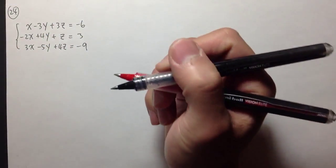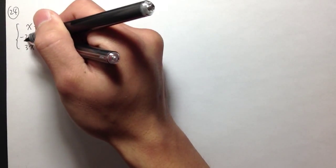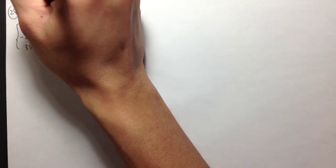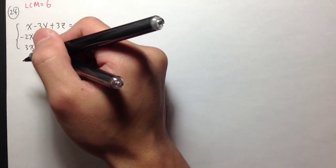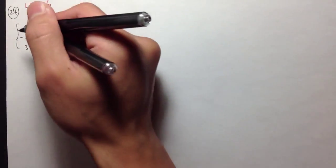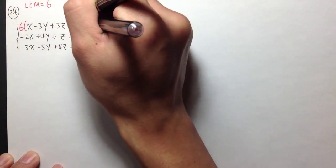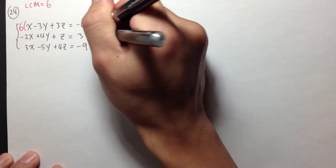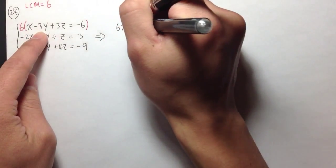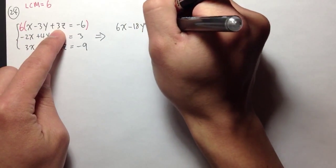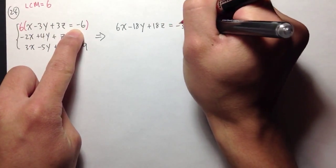My first goal is to get rid of x. I need to look at the lowest common multiple of 1, 2, and 3. The LCM is equal to 6. That means I want to make all the coefficients of x equal to 6. For the first equation, I just have 1x, so I need to multiply 6 throughout. I get 6x, minus 18y, plus 18z equals negative 36.